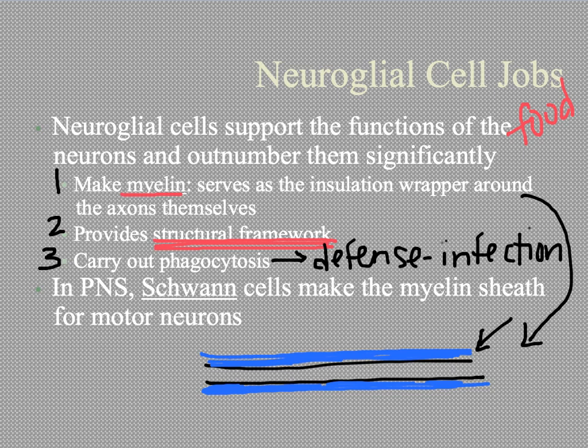In the peripheral nervous system — the part involved in motor movement — the neuroglial cells have a specific name called Schwann cells, named for the gentleman who first identified them. They have the exact same job: they make the myelin sheath just for the cells that tell your body to move.